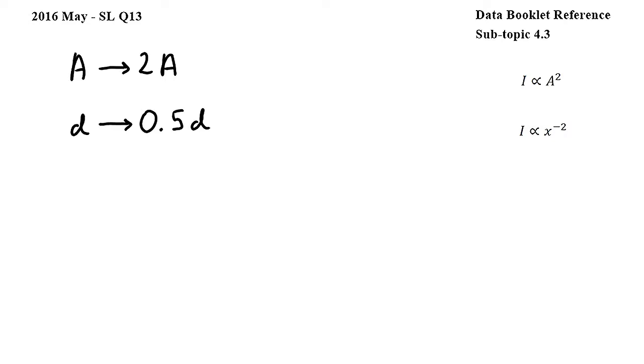Let's start by looking at the effects of the amplitude change by using this relationship from subtopic 4.3. Here I is intensity and A is amplitude. This relationship tells us that the intensity is proportional to the amplitude squared. This means that as amplitude is increased, the intensity increases in a squared manner.